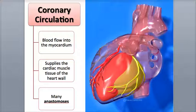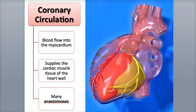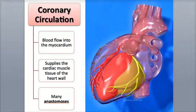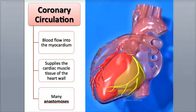Hello everybody, this is Rob Swatsky from the York Campus of Hack. In this podcast, we'll be reviewing the coronary circulation. We know how the body's tissues and organs receive their oxygen and nutrients and dump off their carbon dioxide and waste, but how does the heart — in particular the myocardium — receive all the essentials it needs to properly function?